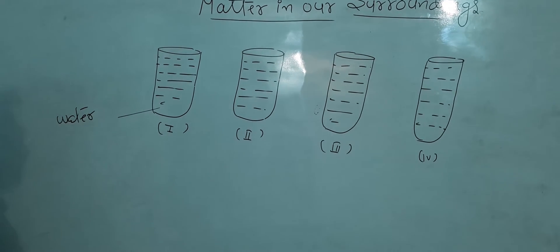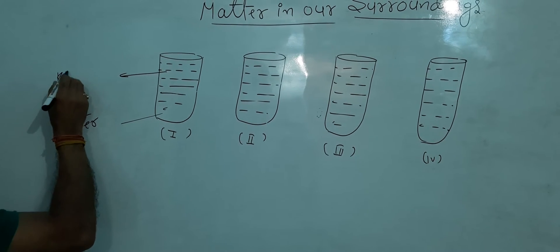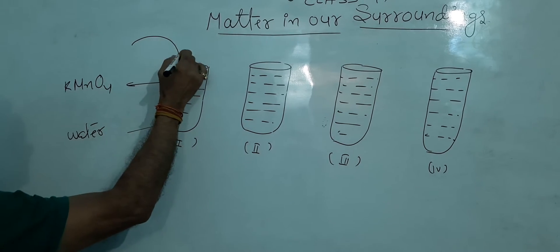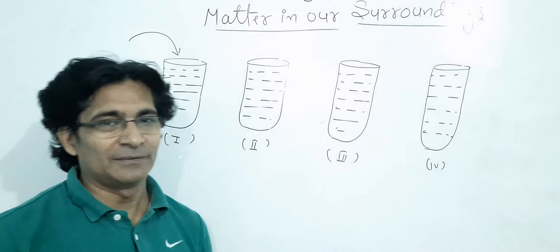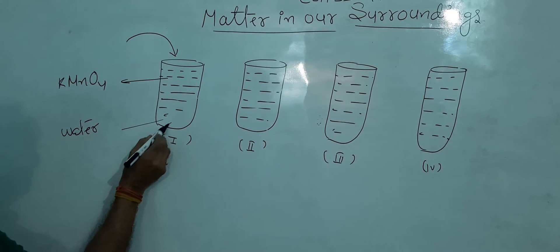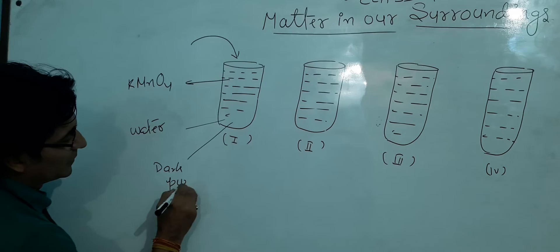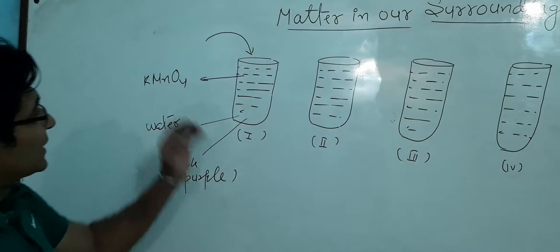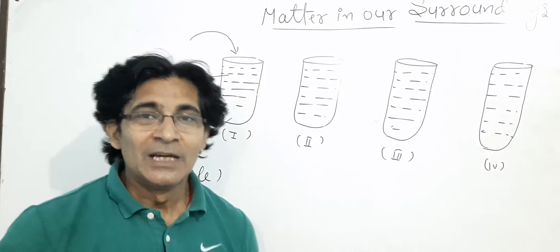Now we take a compound which is known as potassium permanganate, that is KMnO4. We pour a spoon of potassium permanganate into the test tube one. Now, as soon as the KMnO4 gets dissolved into it, this becomes dark purple in color. This means the atoms of KMnO4 have been dissolved into the water.